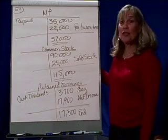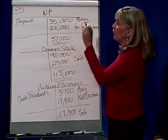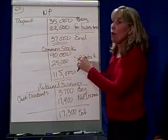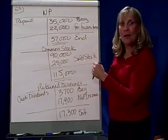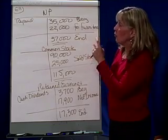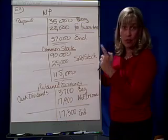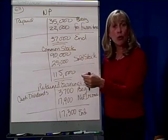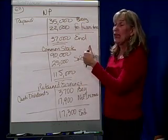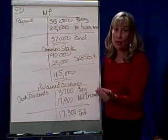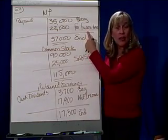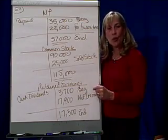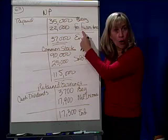The balance sheet shows a beginning balance of $35,000 and an ending balance of $37,000. So we know that, because it went up, we bought something and financed it with a note payable. You'll recall that we bought furniture for $22,000 and gave a note in exchange. That's why notes payable increased by $22,000. And where do we disclose this note for furniture? Down there at the very bottom as a non-cash transaction — so we've already taken care of this.